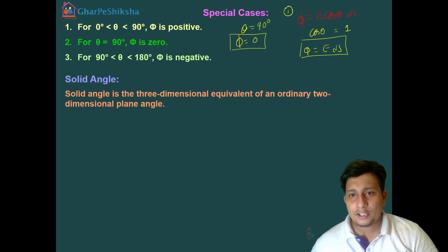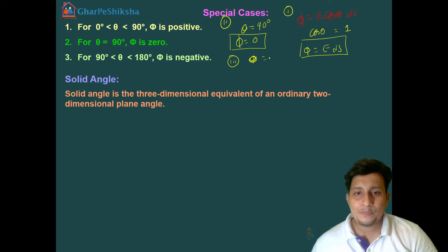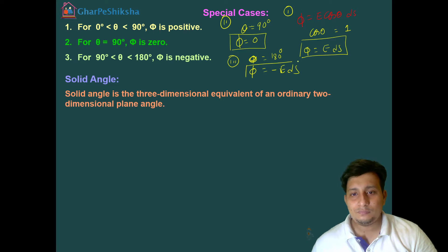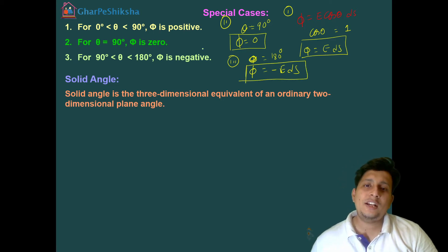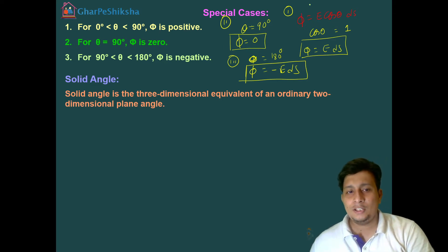This is the first case, this is the second case. And in the third case, if theta equals 180 degrees, then phi will be negative — it will be negative Eds. So this is how electric flux changes with respect to the angle.